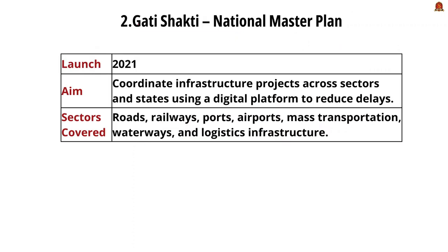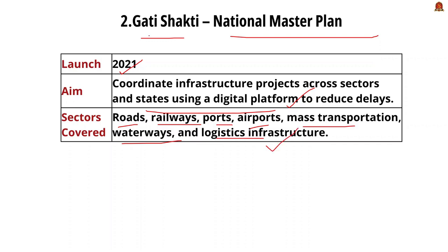The next initiative is the Gati Shakti National Master Plan, launched in 2021. Its objective is to facilitate coordinated planning and implementation of infrastructure projects to reduce delays and bottlenecks. Sectors like roads, railways, ports, airports, mass transportation, waterways, and logistics are covered under Gati Shakti. The aim is to integrate various ministries through a common digital platform, ensuring better synchronization and coordination between all ministries.